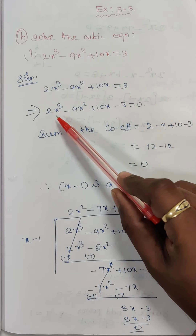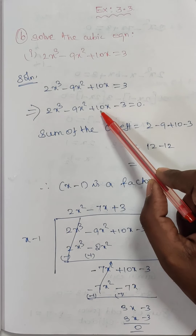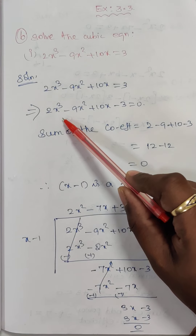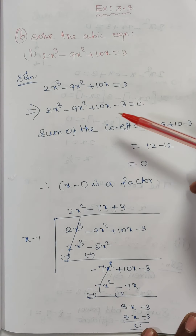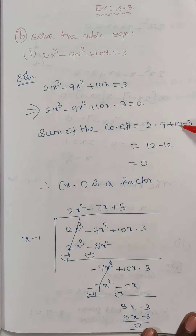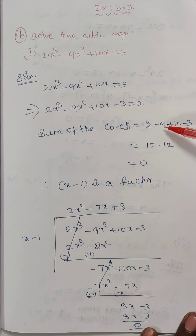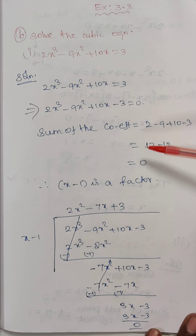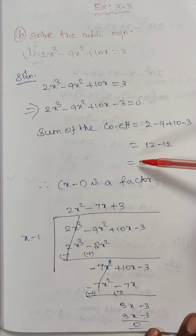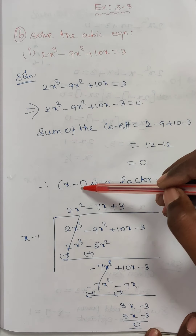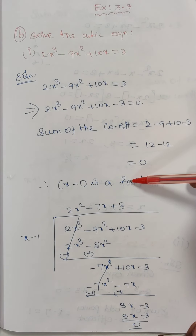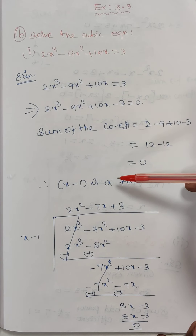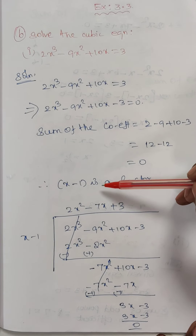The coefficients are 2, minus 9, 10, and minus 3. Sum of the coefficients: 2 minus 9 plus 10 minus 3. That gives 2 plus 10 equals 12, and minus 9 minus 3 equals minus 12, so 12 minus 12 equals 0. Since the sum of the coefficients equals 0, then x minus 1 is a factor.